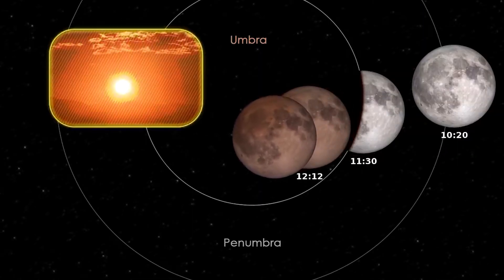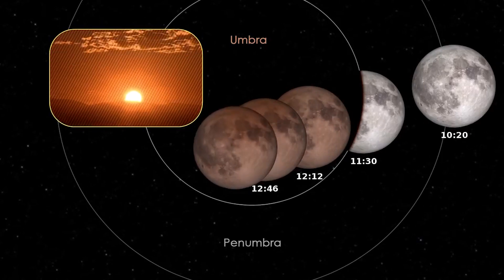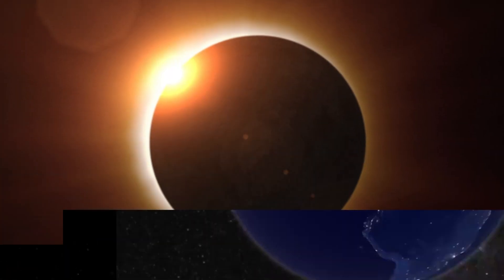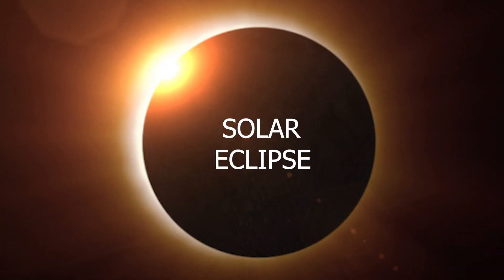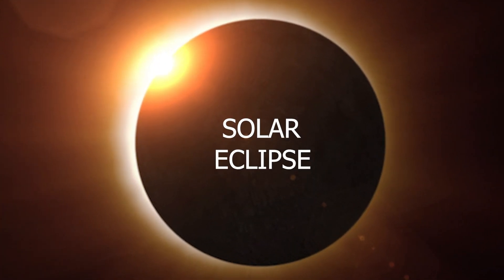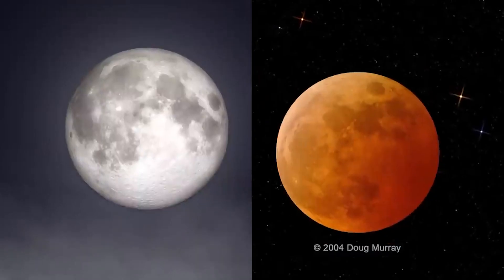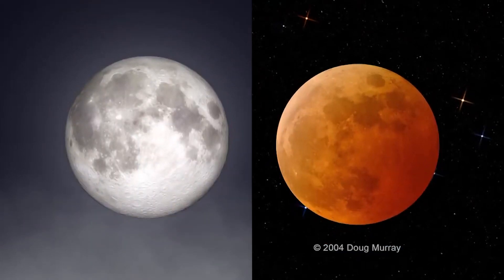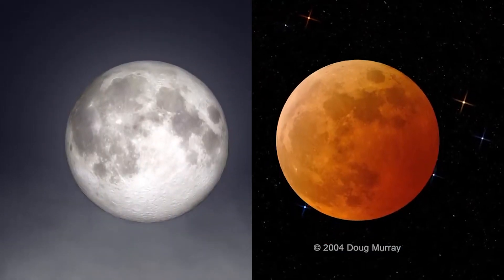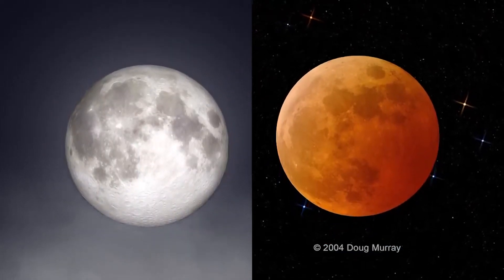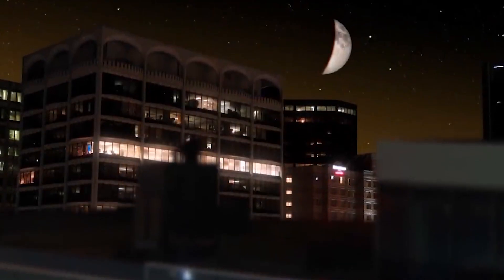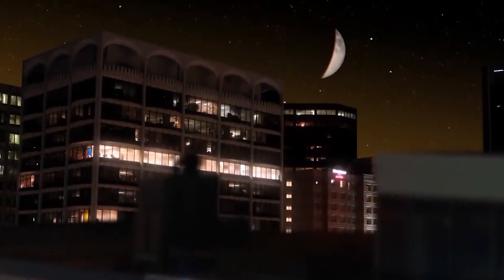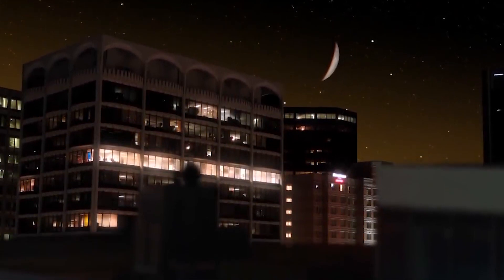The reddish color is due to sunlight scattered through Earth's atmosphere. Unlike a solar eclipse, the more dust or clouds in Earth's atmosphere, the redder the moon will appear.